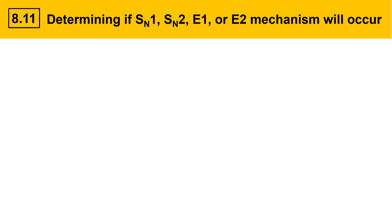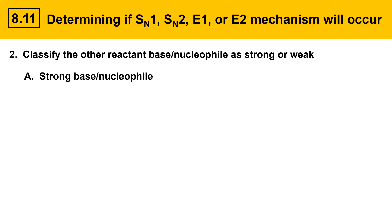What you'll need to do next is to classify the other reactant besides the alkyl halide, the base nucleophile component, as either strong or weak. If it's a strong base and nucleophile, these species aggressively attack alkyl halides, and they tend to force second-order kinetics. These are the bimolecular reactions. Therefore, SN2 and E2 reactions are possible with strong bases and strong nucleophiles.